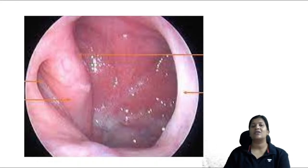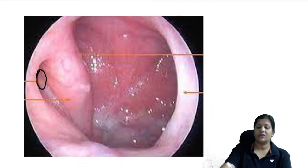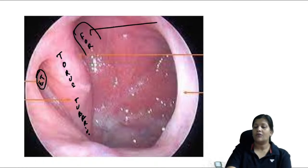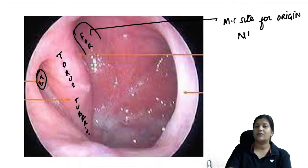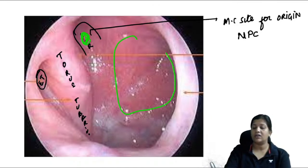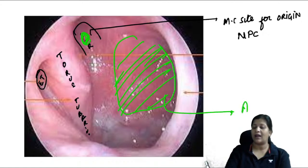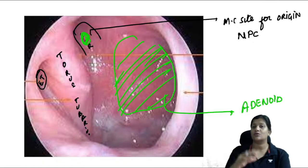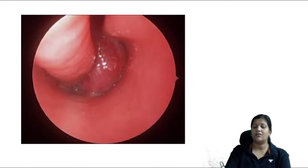In the nasopharynx, the eustachian tube opening is visible; behind it is the torus tubarius, and behind that is the fossa of Rosenmüller — the most common site of origin of nasopharyngeal carcinoma. A midline growth in the nasopharynx in children is most likely an adenoid; a growth in the fossa of Rosenmüller suggests NPC.